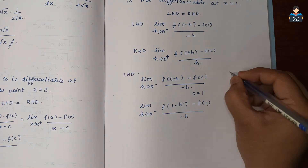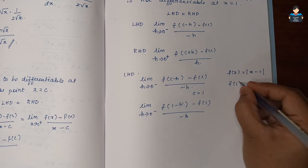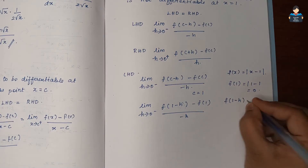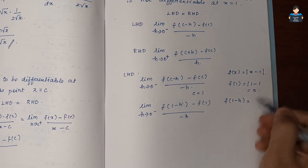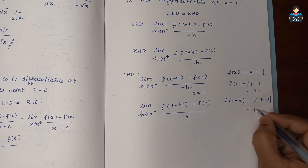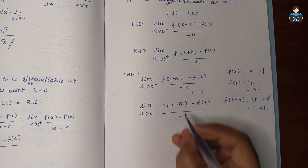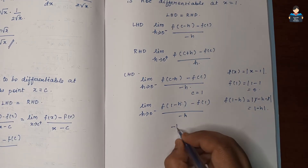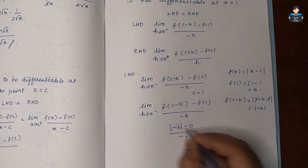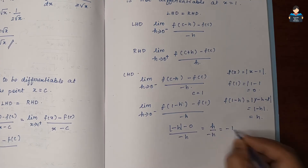f(1) = |1 - 1| = 0. f(1 - h): substituting x = 1 - h gives |(1 - h) - 1| = |-h| = h. So the left-hand derivative becomes h - 0 by (-h), which is |−h| / (−h) = h / (−h) = −1.